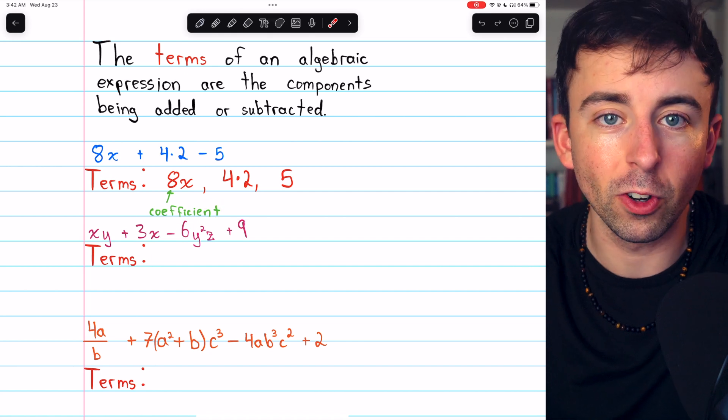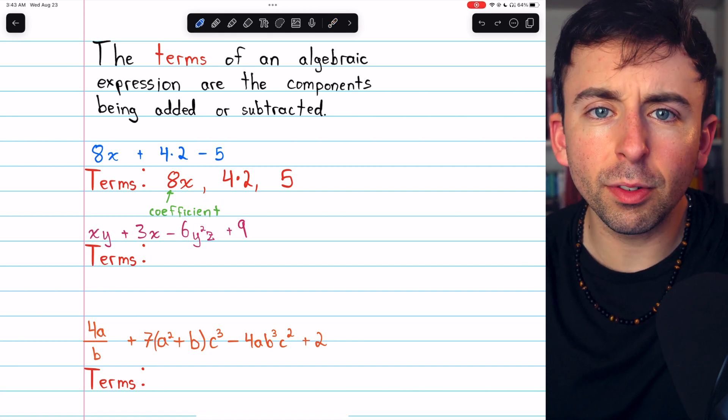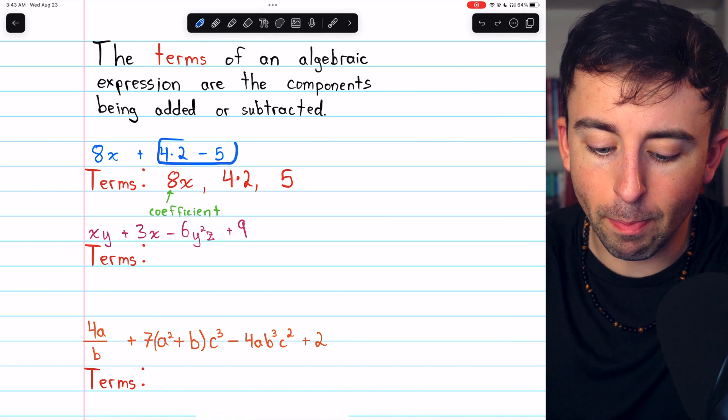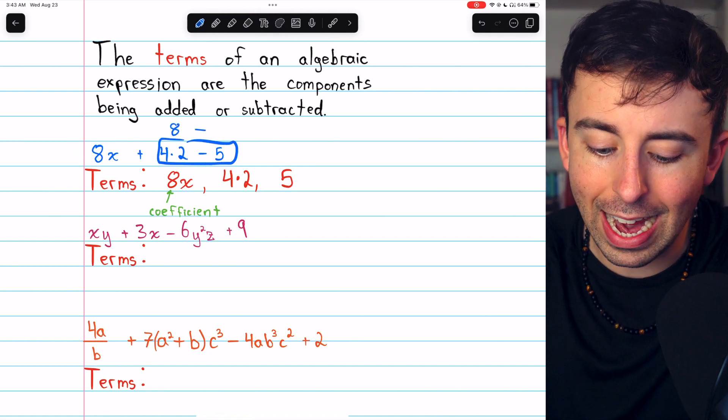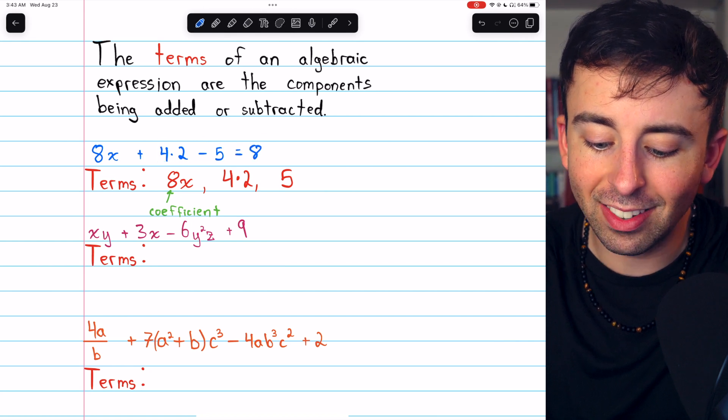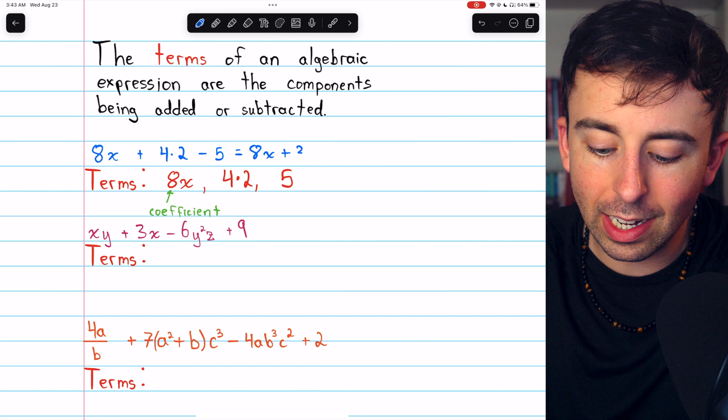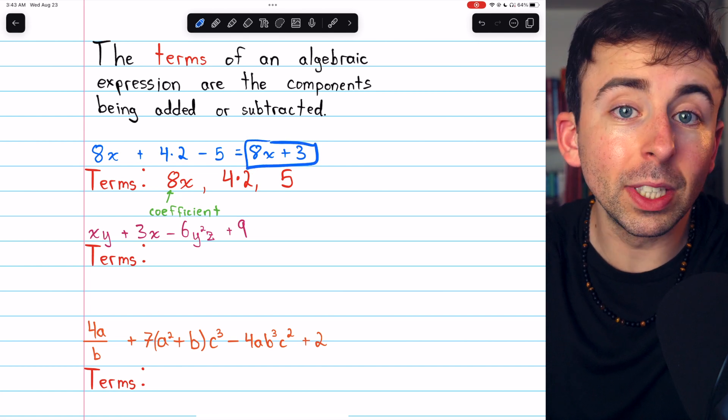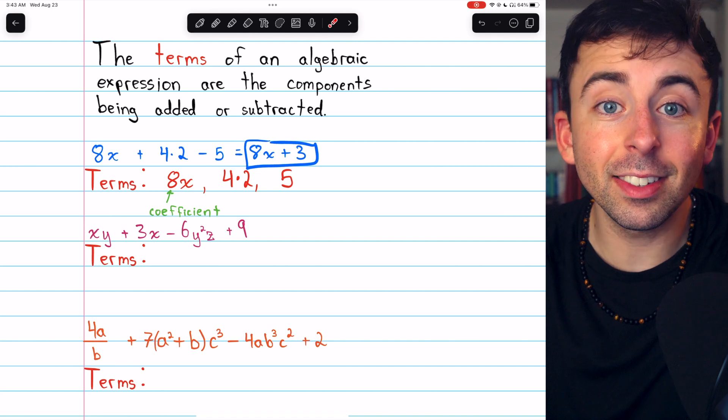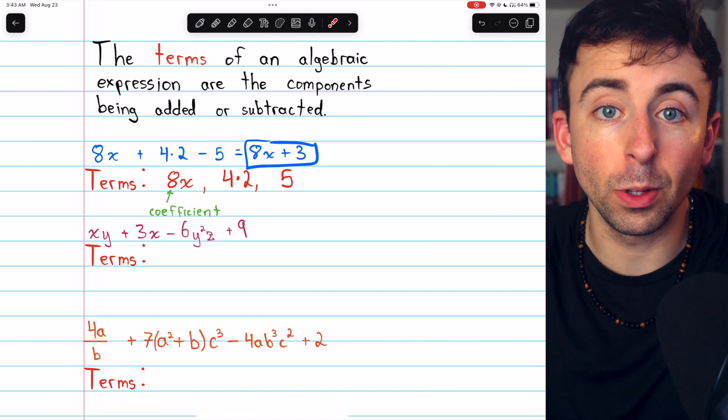So we call it a coefficient. Another thing to know is that this expression isn't fully simplified. 4 times 2 minus 5 is just 8 minus 5, which is 3. So we could rewrite this expression as 8x plus 3. And if we write it like this, then it only has two terms. So how many terms an expression has can certainly depend on how you write it.